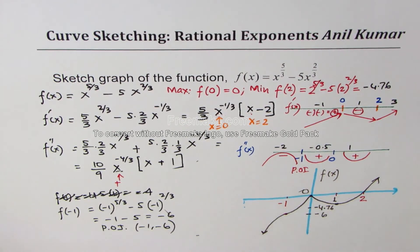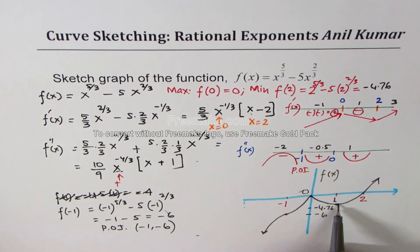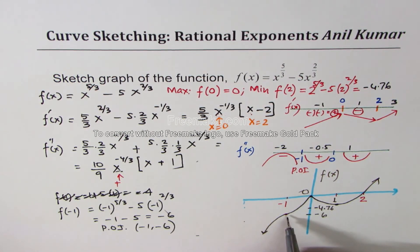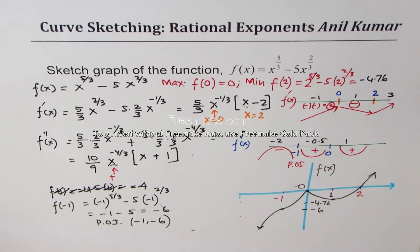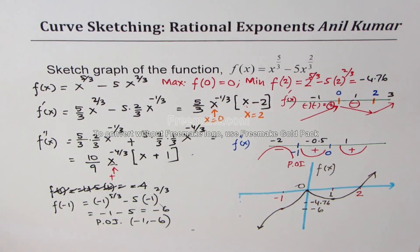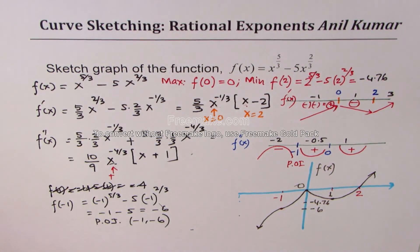So that is how we sketch the function using the first and second derivatives. We observed a point of inflection at x = -1, a local maximum at x = 0, and a local minimum at x = 2. The function is concave down from negative infinity to -1 and concave up thereafter. I'm Anil Kumar — feel free to share your comments, subscribe, and all the best.